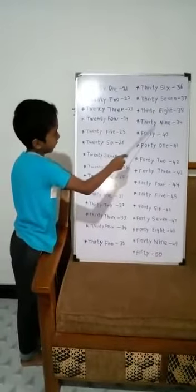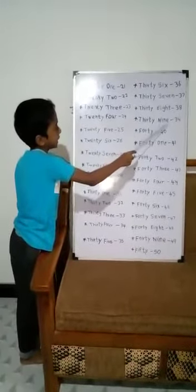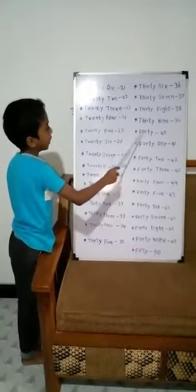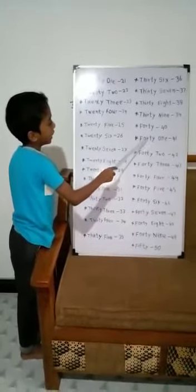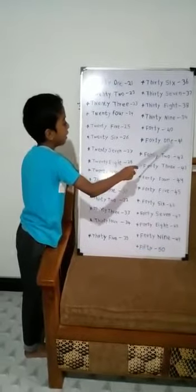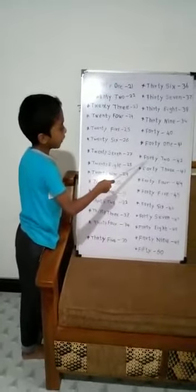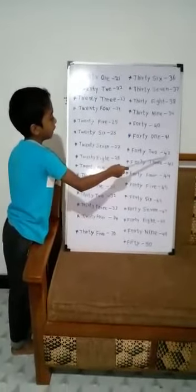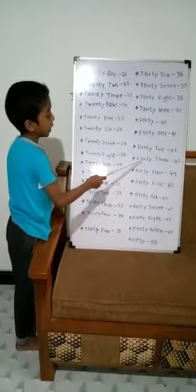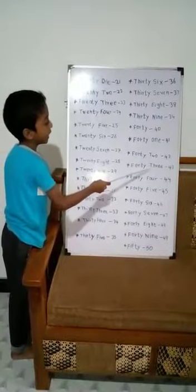Thirty, nine, 39. Thirty, 40. Thirty, one, 41.